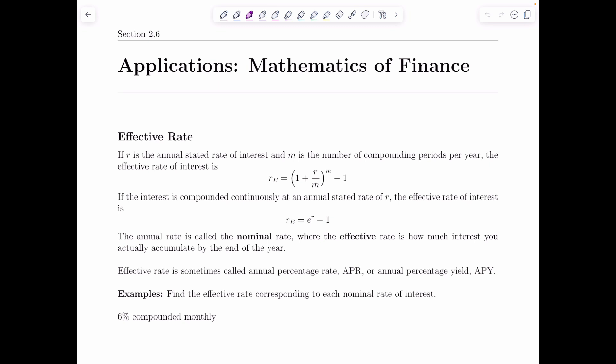First thing we're going to talk about is effective rate. If R is the annual stated rate of interest and M is the number of compounding periods per year, then the effective rate of interest is written R sub E, that means effective rate, one plus R divided by M raised to the M minus one.